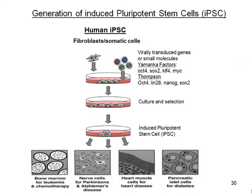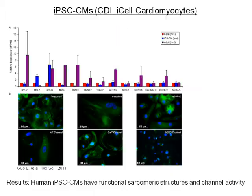Recent advancements in stem cell technologies have allowed for the differentiation of IPS-derived cell lines, including cardiomyocytes. This novel model not only expresses functional contractile proteins such as troponin T, alpha-actinin, and alpha-beta-myosin heavy chain, but also functional channels such as sodium, calcium, and although at low levels, the HERG channel as well.